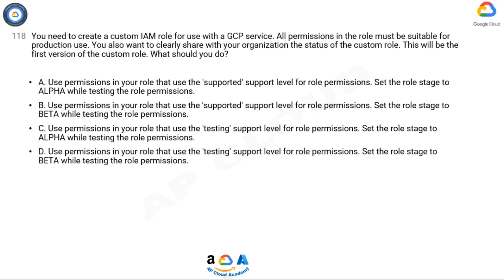C. Use permissions in your role that use the testing support level for role permissions. Set the role stage to alpha while testing the role permissions. D. Use permissions in your role that use the testing support level for role permissions. Set the role stage to beta while testing the role permissions.